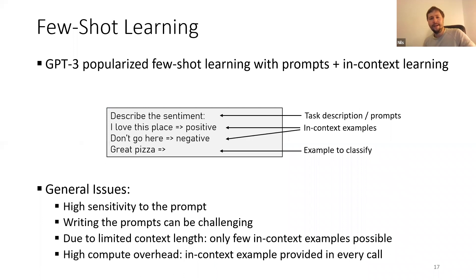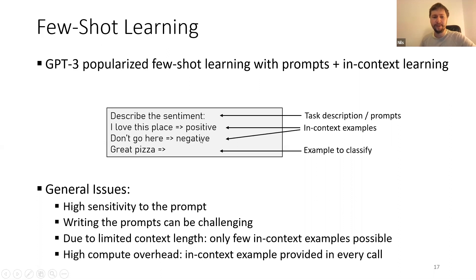Another interesting application we showed this year is few-shot learning with embedding models. GPT-3 popularized few-shot learning with prompts and in-context learning. What OpenAI showed is that for sentiment classification, you create a prompt like 'describe the sentiment,' provide in-context examples such as 'I love this place' labeled positive and 'I don't go here' labeled negative, then present a new review like 'great pizza' to classify.